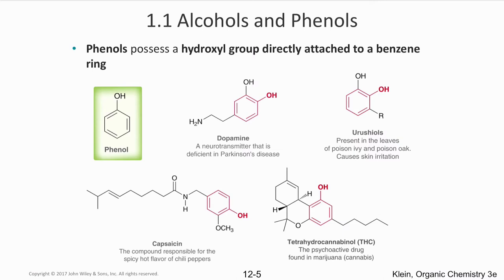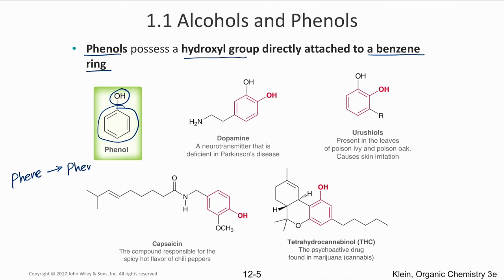Phenols are compounds with a hydroxyl group directly attached to a benzene ring. The name comes from 'phen' for benzene — adding an OH group gives phenol. If the OH group is removed and there's an empty orbital, the group is called phenyl.